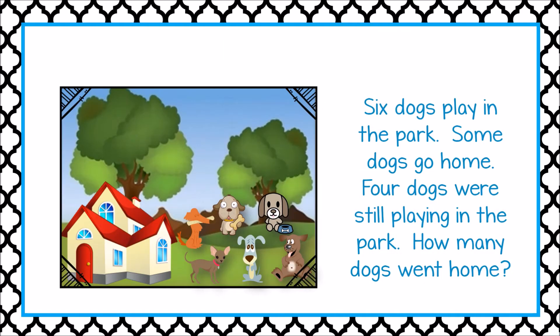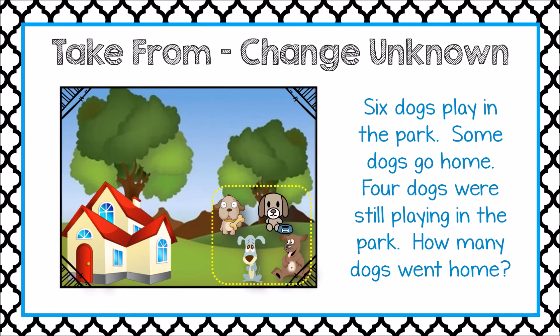Six dogs play in the park. Some dogs go home. Four dogs are still playing in the park. How many dogs went home? We know the starting amount is six. We don't know the change, or the amount that leaves, but we know the result is four. So this is a take from, change unknown problem.